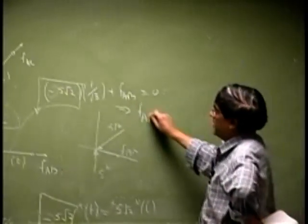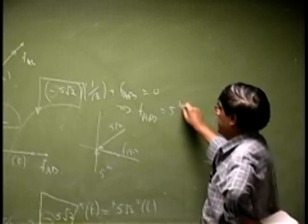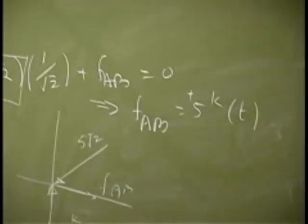From here, all you are going to get will be FAB as 5 kips. It came out positive, so it remains as tension.